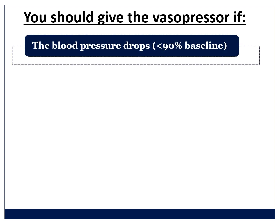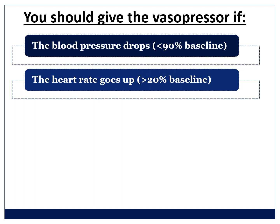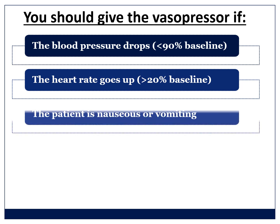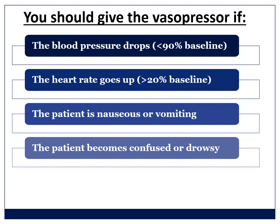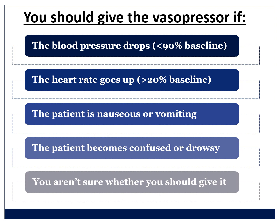You should give a vasopressor if the blood pressure drops below 90% of the baseline systolic. You should give it if the heart rate goes up by more than 20% of the baseline. You should give it if the patient is nauseous or vomiting, because as you've seen, it's predominantly hypotension that causes that. You should give it if the patient becomes confused, drowsy, or stops talking. And if you're not sure whether you should give it, then you should give it. The default in obstetric spinal hypotension is to treat — usually with fluids and phenylephrine, or ephedrine if the heart rate is low.